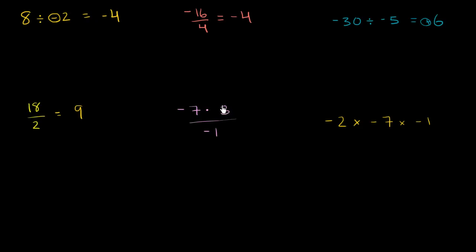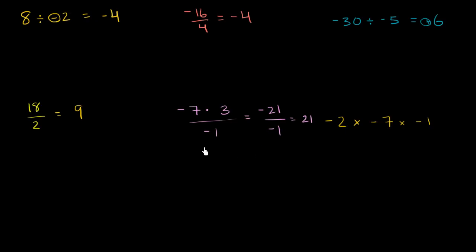We're going to take that product and divide it by negative 1. In the numerator, negative 7 times 3: positive 7 times 3 would be 21, but since exactly one of these two is negative, this is going to be negative 21. So we have negative 21 over negative 1. Negative divided by a negative is going to be a positive, so this is just going to be positive 21.